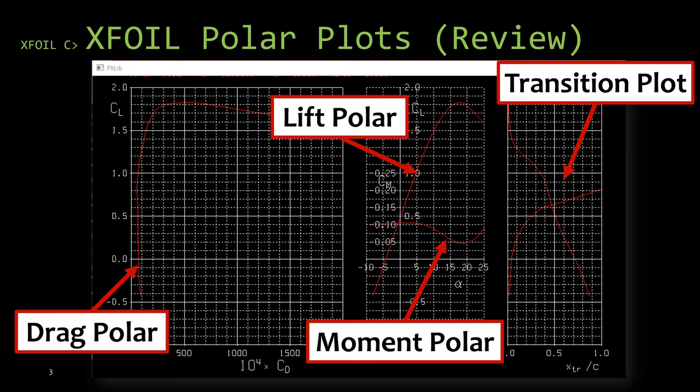The first polar plot, the one here on the left, the drag polar, is the coefficient of drag versus the coefficient of lift. If we know our coefficient of lift, we can estimate our coefficient of drag. The lift polar is the coefficient of lift versus the angle of attack. This is useful if we know our angle of attack and we're wanting to know what the lift coefficient at that angle of attack is, but it also lets us know the lift curve slope, the stall angle, max coefficient of lift, the angle of attack of zero lift.